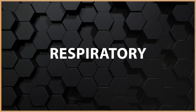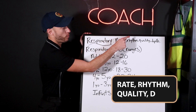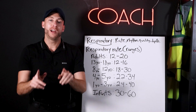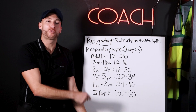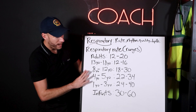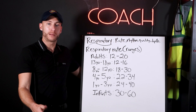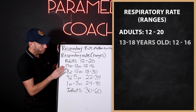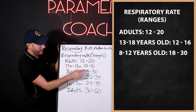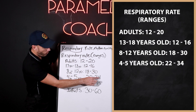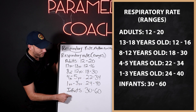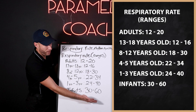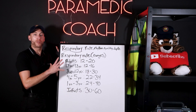On respiratory, we look at rate, rhythm, quality, sounds, and depth — this all gives a picture of the patient. The vital sign number is the respiratory rate. Normal rates by age group: adults 12–20, adolescents 12–16, ages 8–12 years 18–30, ages 4–5 years 22–34, ages 1–3 years 24–40, infants 30–60. A newborn may be similar to or slightly higher than infant rates.